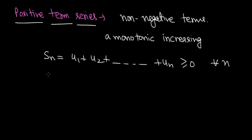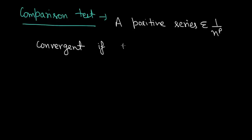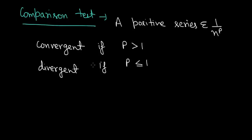For testing the convergency of a positive term series, there is the comparison test. A positive series of the kind sigma 1/nᵖ is convergent if p > 1, and divergent if p ≤ 1. So if we have any positive series of the type sigma 1/nᵖ, and the power of n is greater than 1, the series is convergent; if the power is less than or equal to 1, it is divergent.